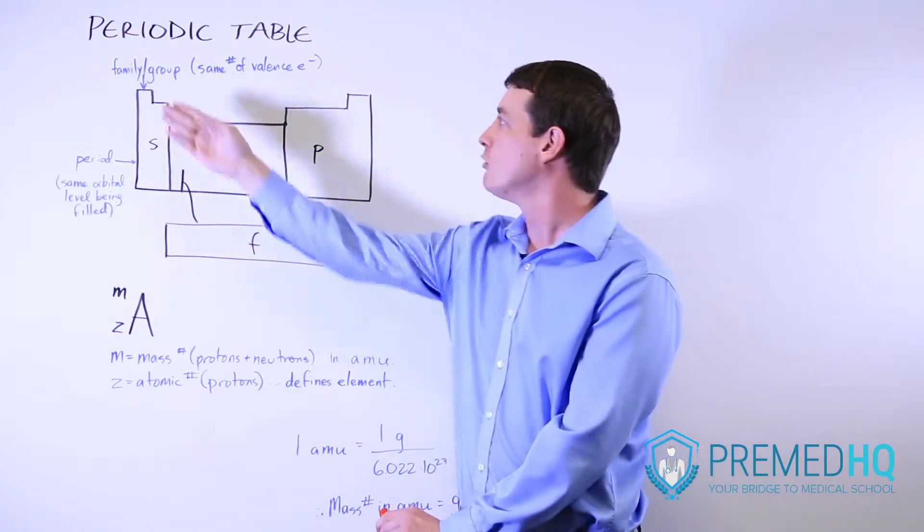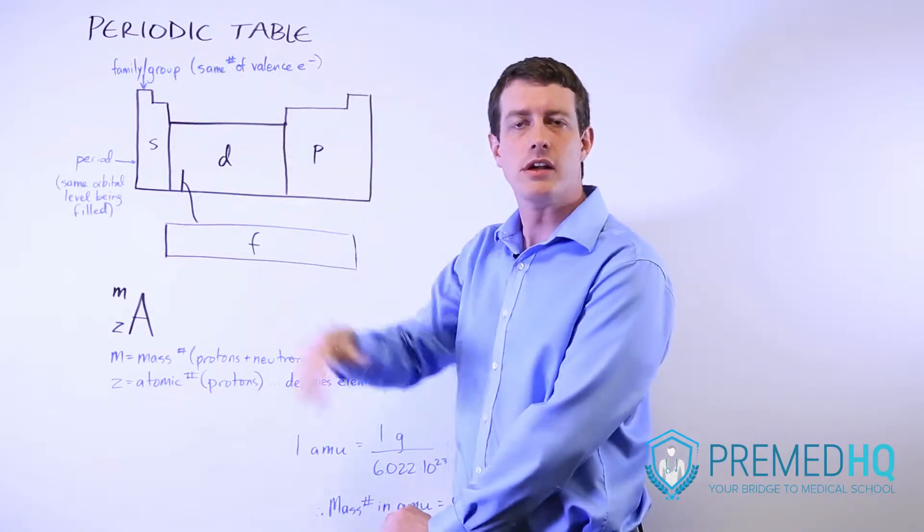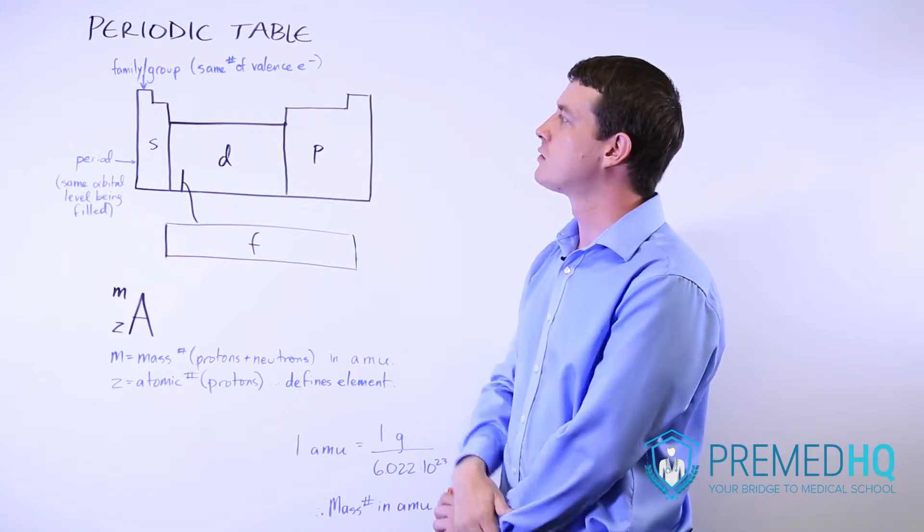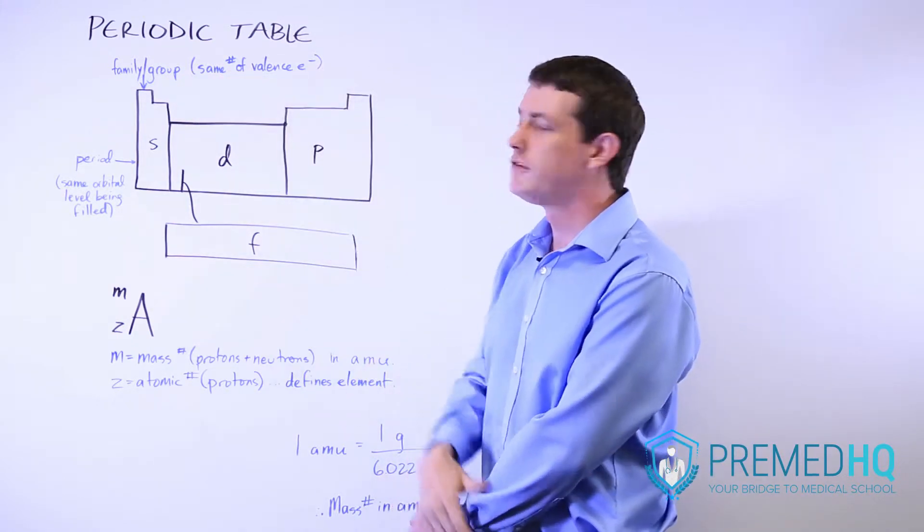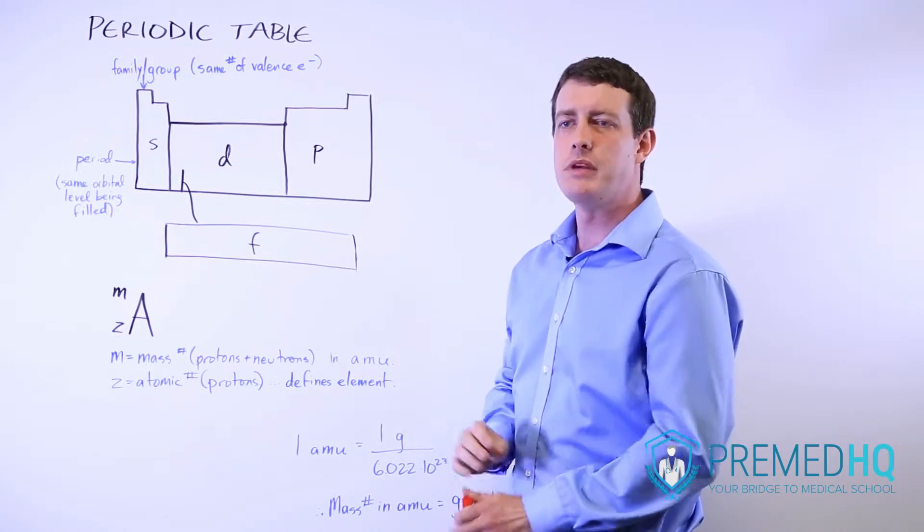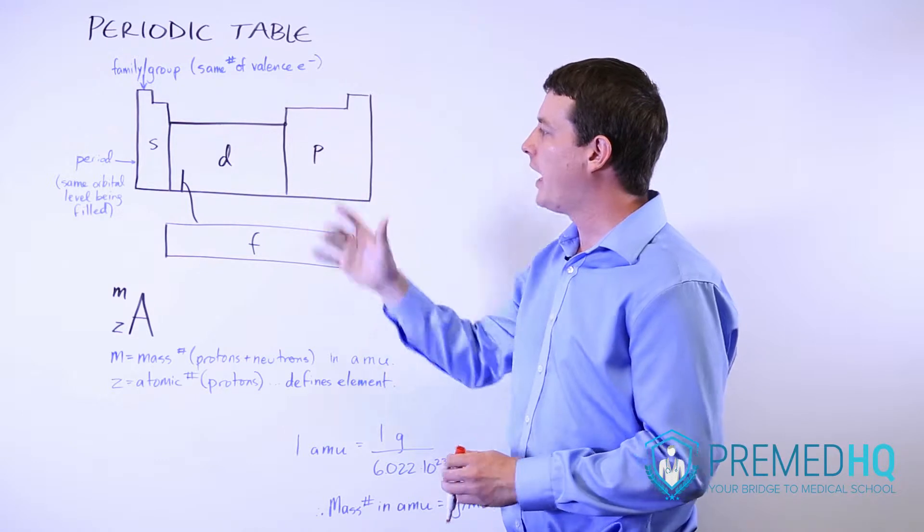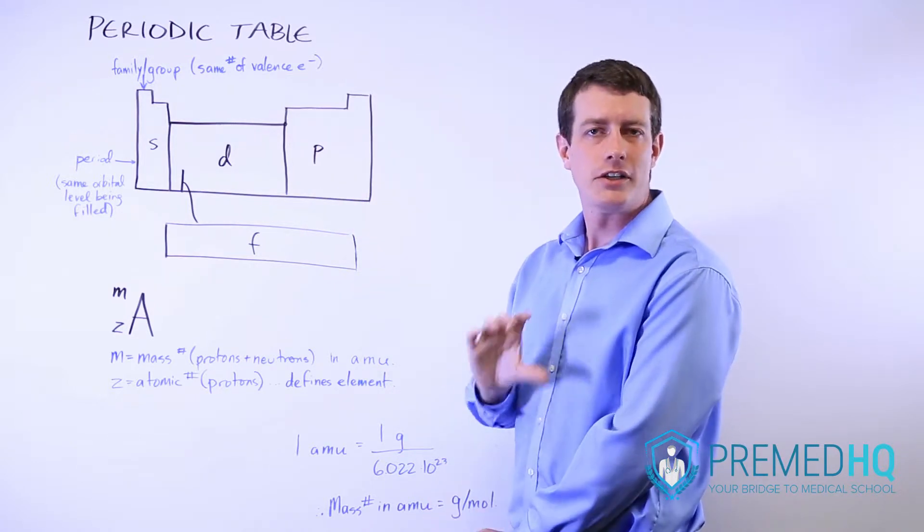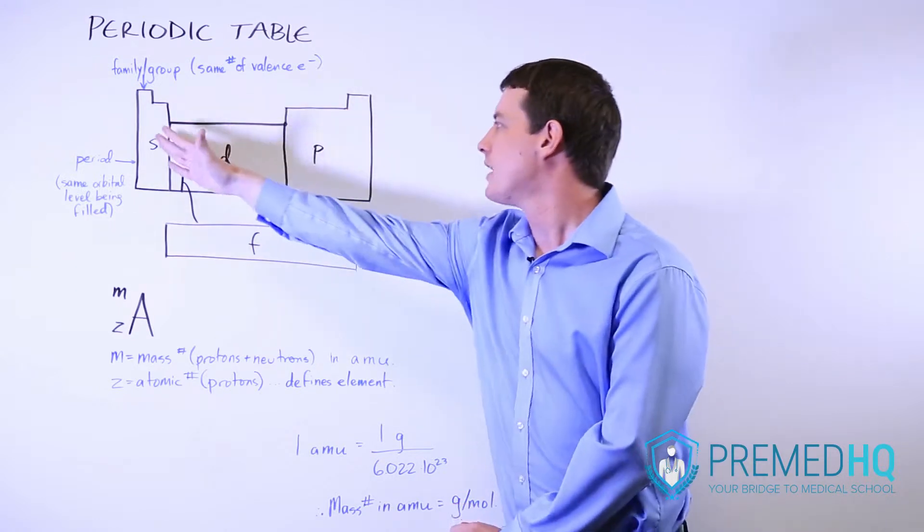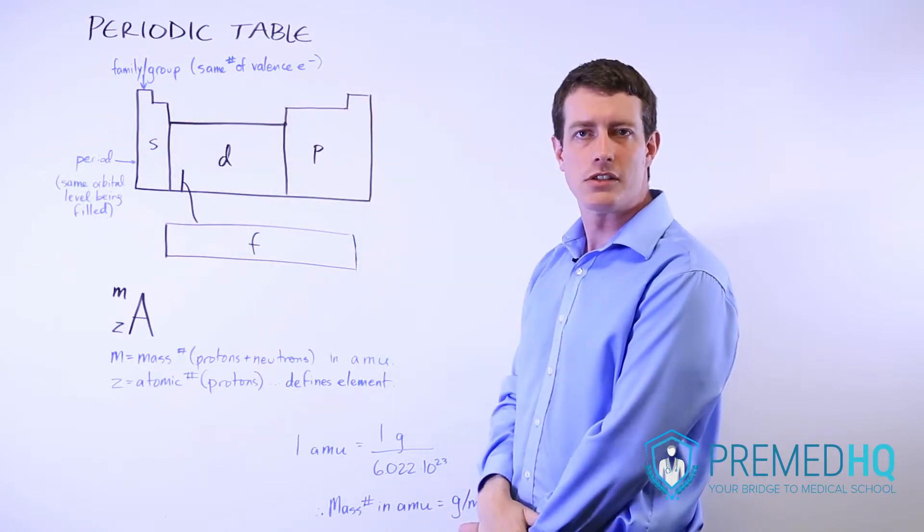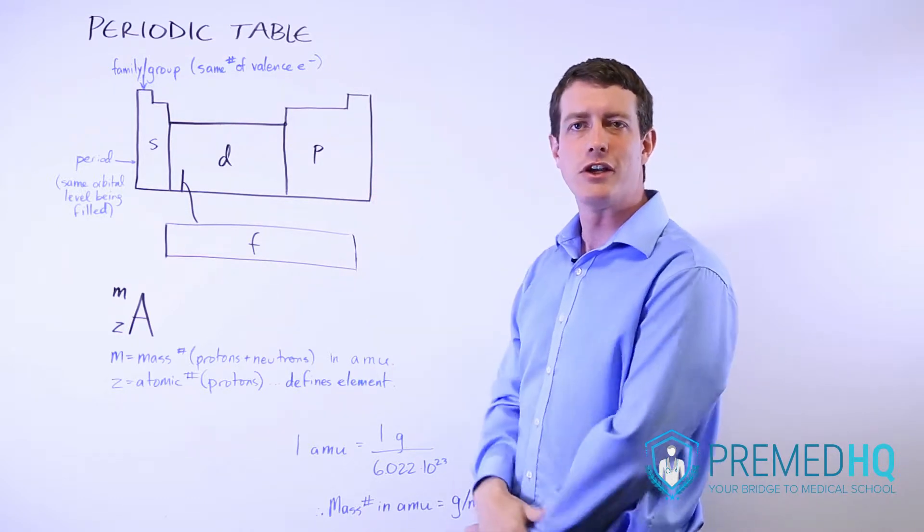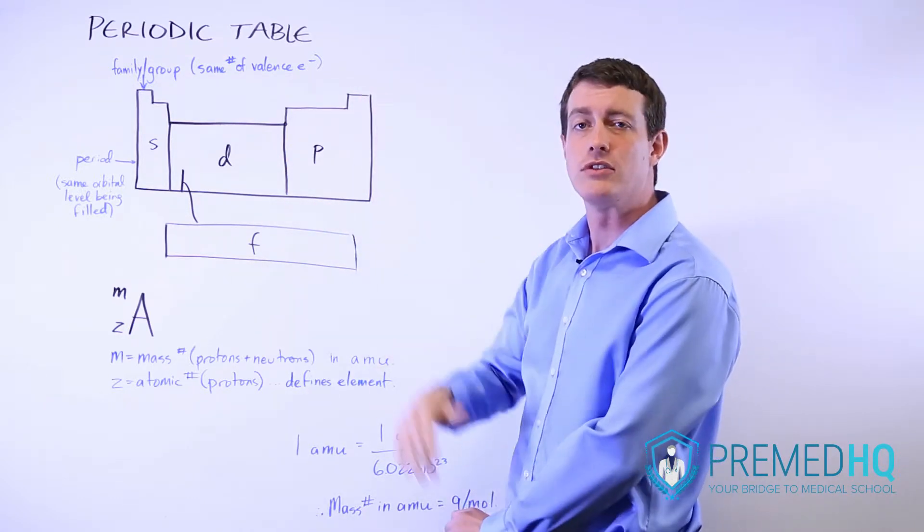You also have families or groups which are the columns in the periodic table. These are relevant because a lot of the elements within a single family or group will share a lot of qualities. The reason why is because there's a desire for all atoms to adhere to Hund's rule, which says that it would like to complete this s and p subshell to complete what is called an octet and attain a noble gas configuration with eight valence electrons in that level.